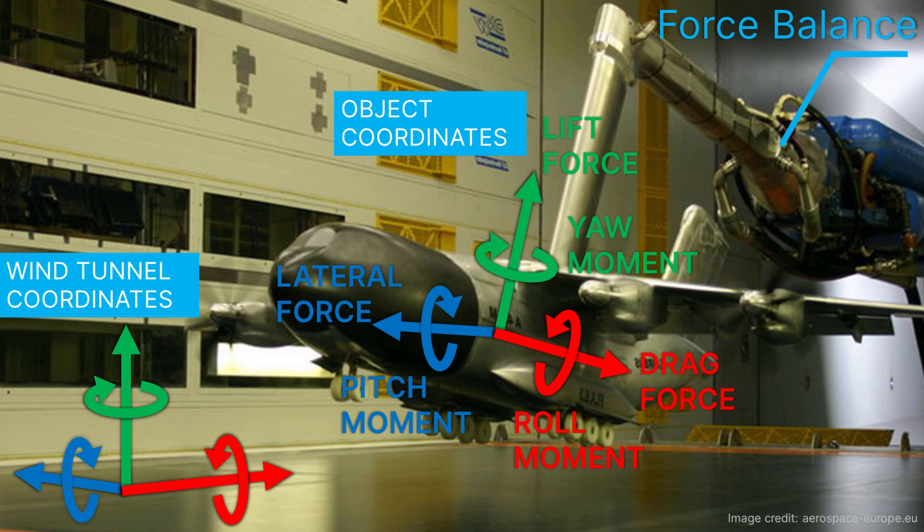One of the most important output parameters of a wind tunnel test campaign are the forces and moments on the object. To obtain these, the object is typically connected to a 3D force balance, which is a device that can measure the forces and moments around three perpendicular axes.